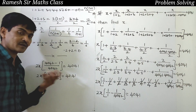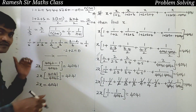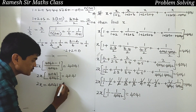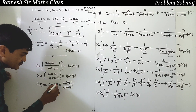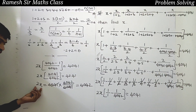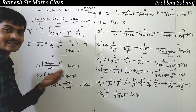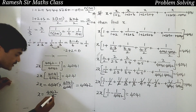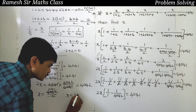Now solving for x: 2x times 4041/4042 equals 4041. Dividing both sides by 4041, we get 2x equals 4042. Therefore x equals 4042 divided by 2, which equals 2021. So x equals 2021.